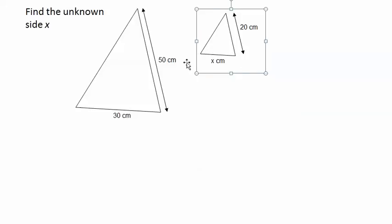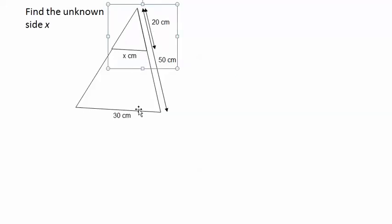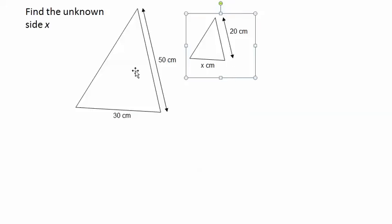and because the angles of the triangles are the same, which we could see back when they were together because these sides are parallel and these two sides are the same angle, these are similar triangles.